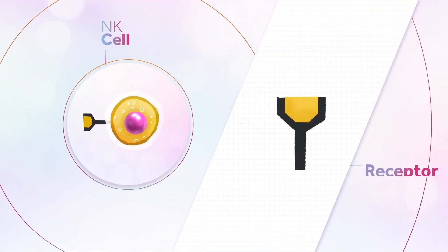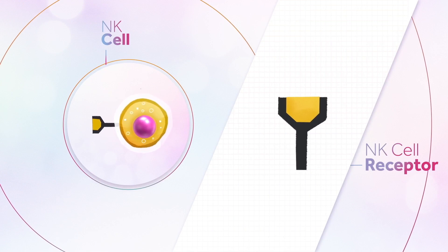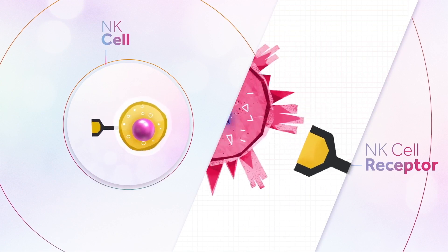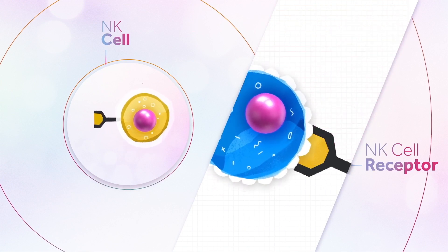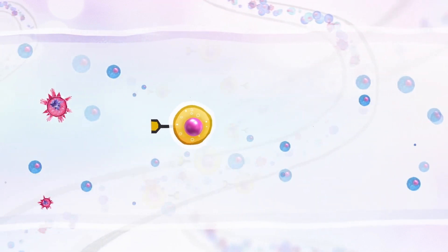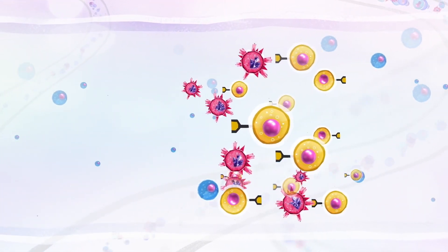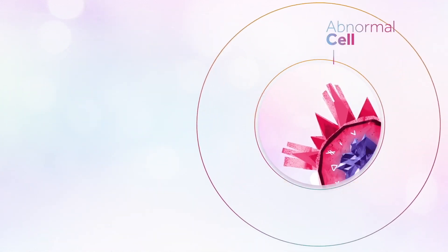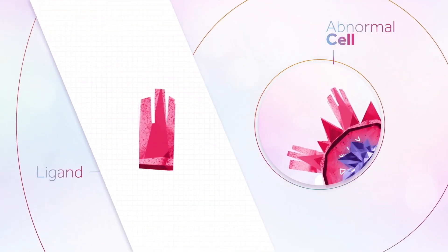NK cells use receptors, which are proteins present on their surface, to distinguish sick cells from normal cells. These receptors recognize and bind specific targets called ligands, which are also proteins expressed by sick cells, somewhat like a magnet is drawn to a metal mass.